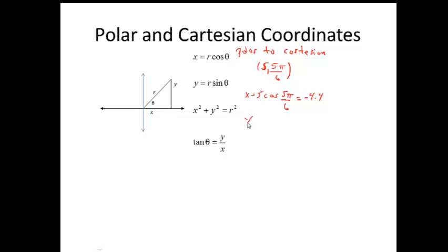And we end up with negative 4.4. Well, to get the y component, we go 5 sine 5 pi over 6. You get positive 2.5.